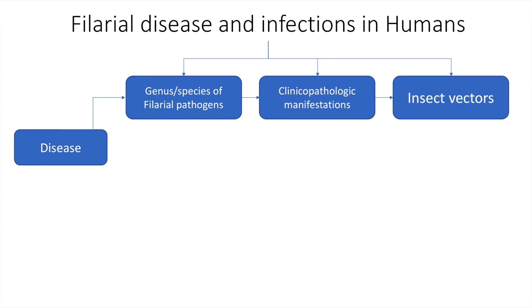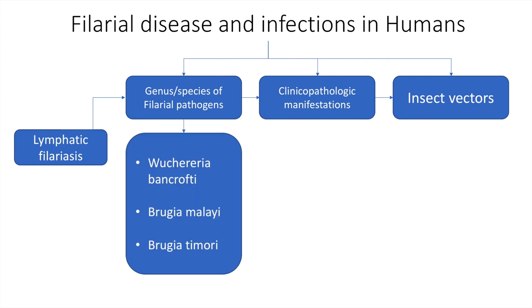We will begin with lymphatic filariasis. The species are Wuchereria bancrofti, Brugia malayi, and Brugia timori.